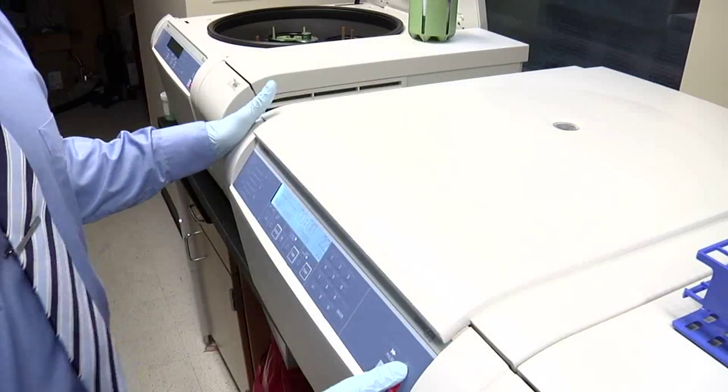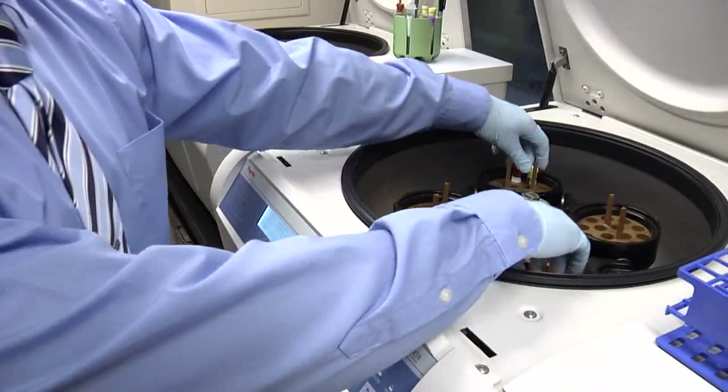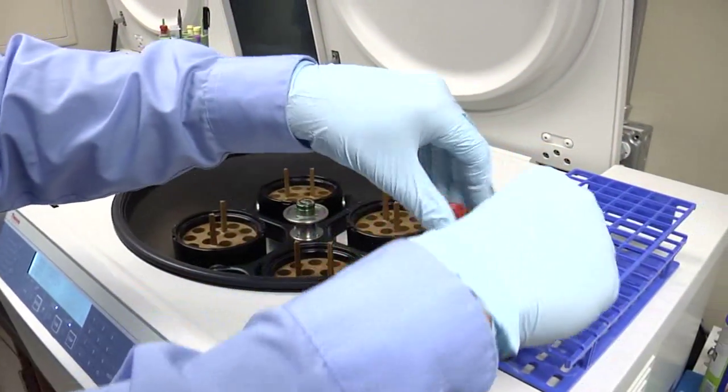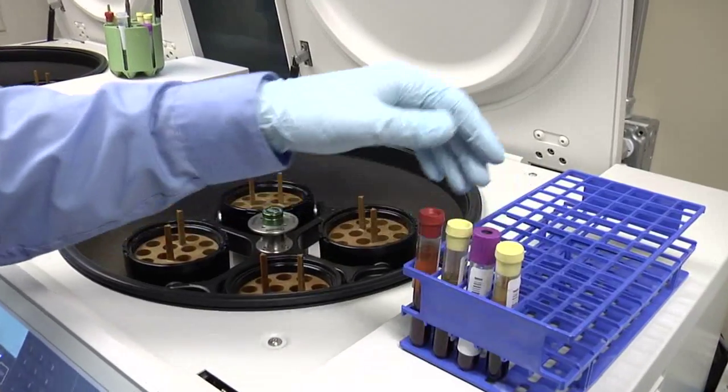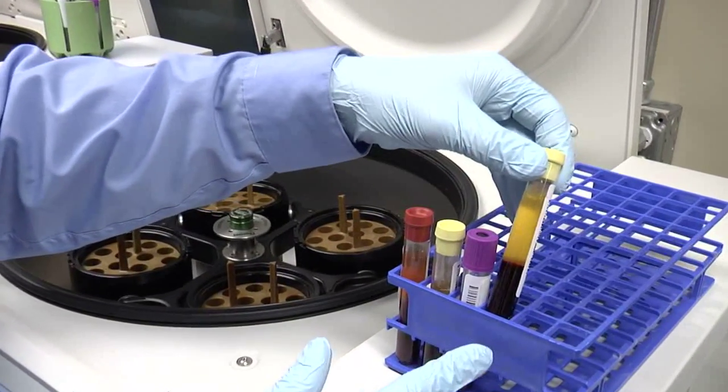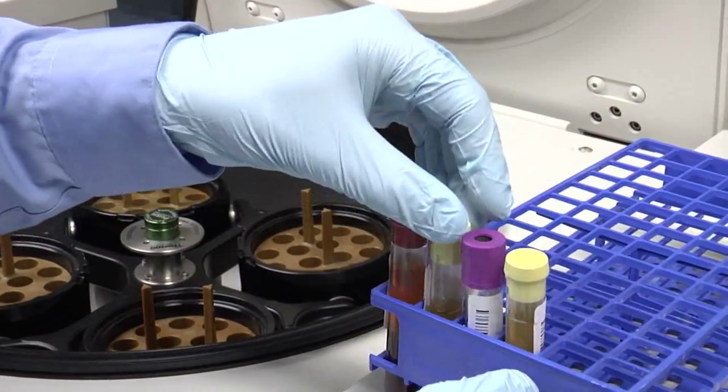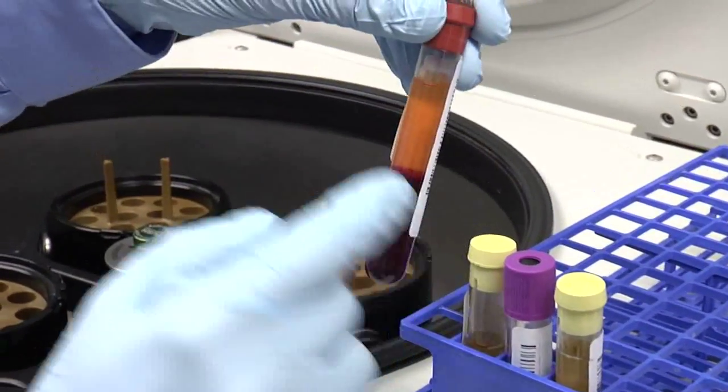After the spin is complete, open up the centrifuge and take out the samples. You can see the sample has been separated into plasma, buffy coat, and packed red blood cells for these three tubes, and for the fourth, it's only serum.